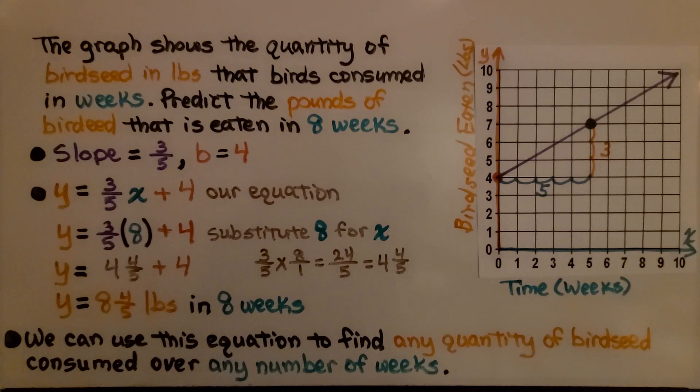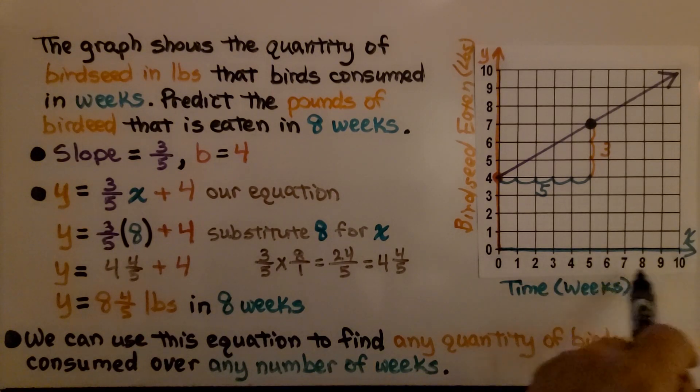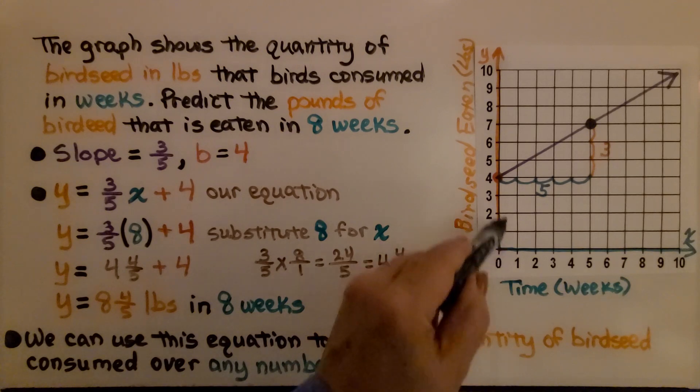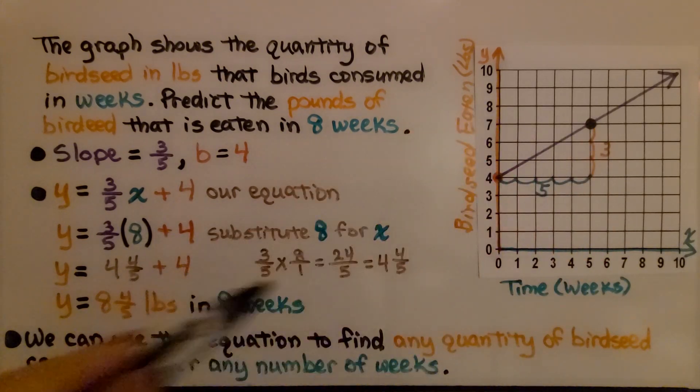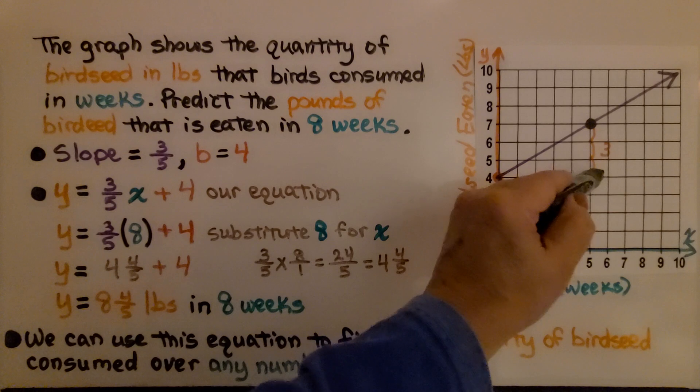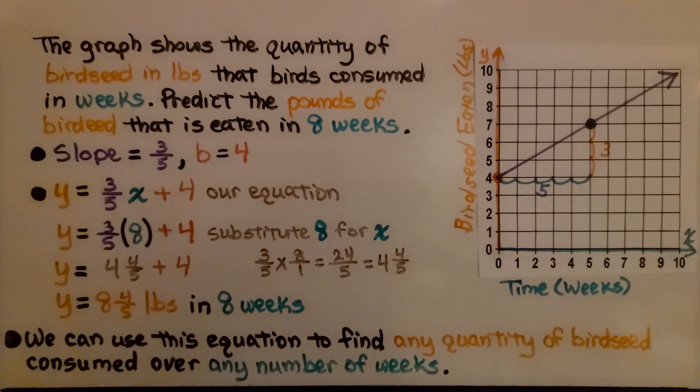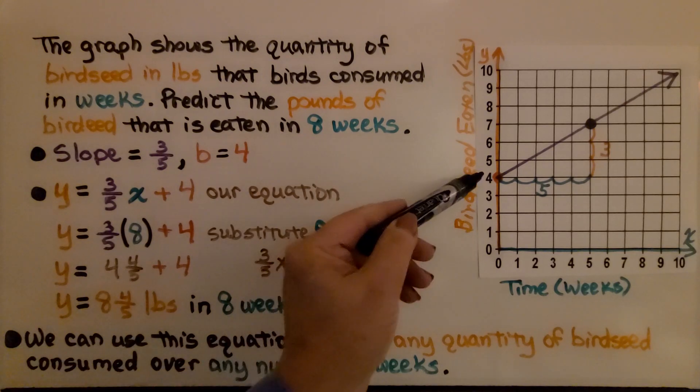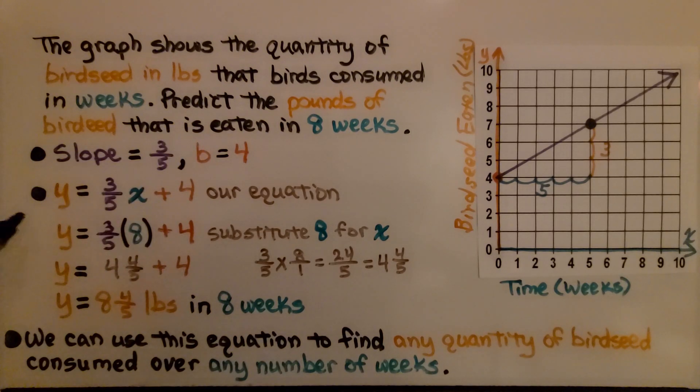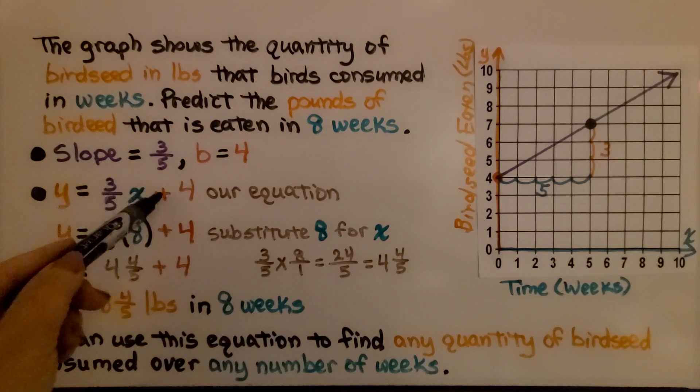Here we have another one where we're just going to count the rise over the run on the graph for our slope. The graph shows the quantity of bird seed in pounds that birds consumed in weeks. Predict the pounds of bird seed that is eaten in eight weeks. We can look at the graph and see that the line is going through 4 on the y-axis, so we know our y-intercept b is 4. Now we have our equation: y equals 3/5 x plus 4.